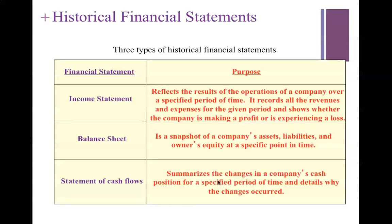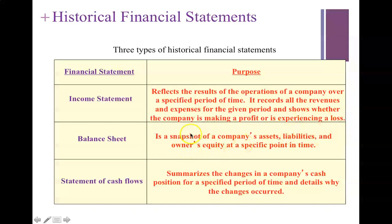There are three types of historical financial statements. An income statement reflects the results of operations over a period of time — it looks at revenues and expenses and whether the company is making a profit or loss. The balance sheet is a snapshot of the company's assets — fixed assets such as the value of buildings, cars, computers, or 3D printers — its liabilities (debts), and owner's equity at a specific point in time. The statement of cash flows summarizes the changes in a company's cash position over a specific period.